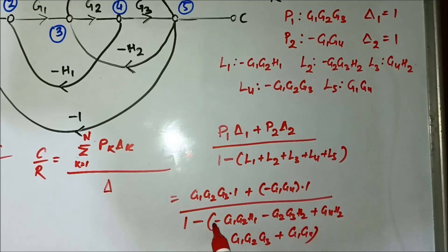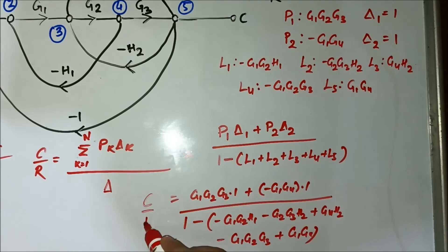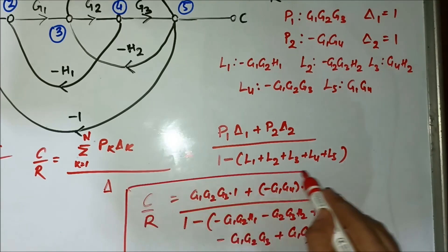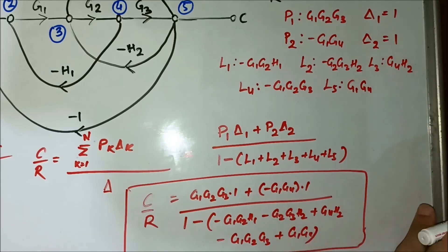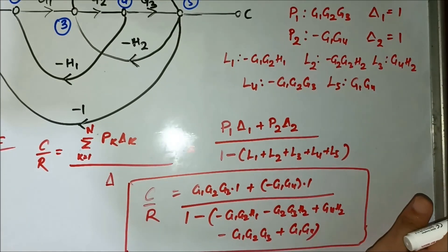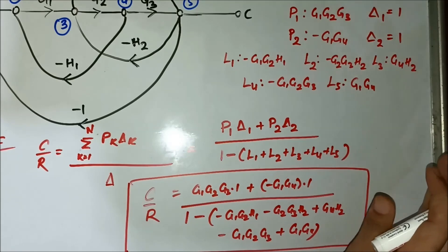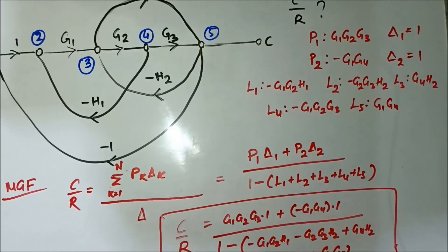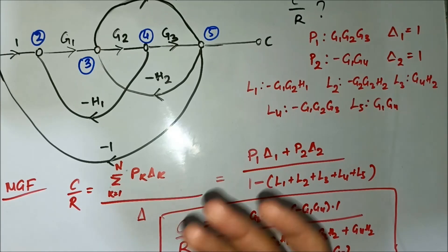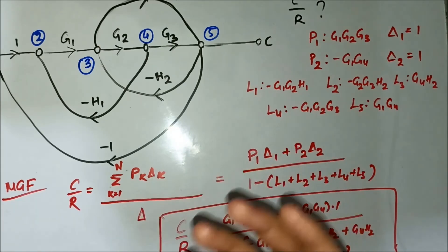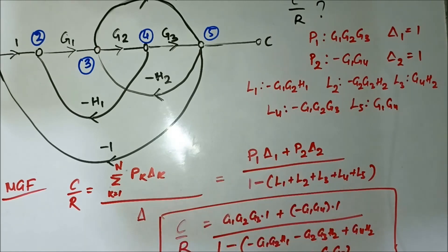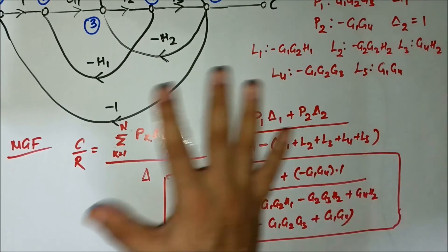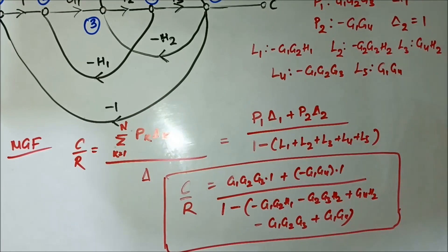Opening the brackets, the minus signs become plus, giving the final transfer function of this signal flow graph. In summary: identify the forward paths, identify the loops, find the path cofactors, check for non-touching loops, then apply Mason's Gain Formula. In this case there were no non-touching loops.